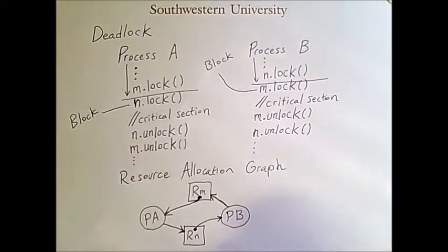So a cycle in a directed graph is when, if you follow the arrows, you end up getting back to where you started. So this is known as a circular wait. And this shows that we have deadlock.